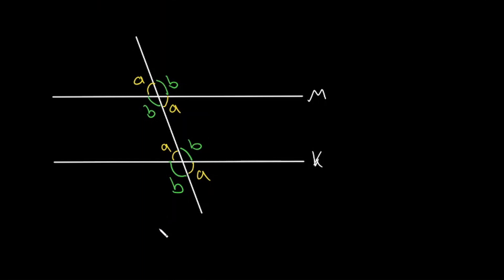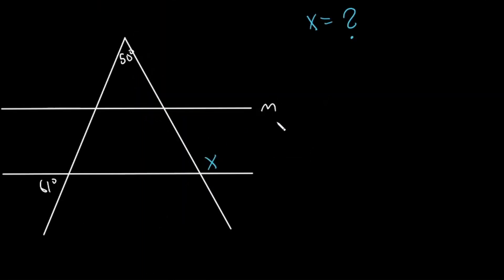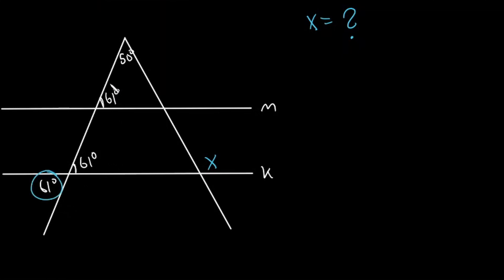Now let's look at a problem that uses this. We are given the two parallel lines M and K again, but this time we have two transversals. We are given the angle 61 degrees, 50 degrees, and the angle X, and we are asked to solve for X. The first thing we can see is that 61 has a vertical angle, so we can write that as 61 as well. This angle 61 corresponds with this angle — they are corresponding angles, so we know they are equal. You could also look at them as alternate exterior angles and jump straight to it.